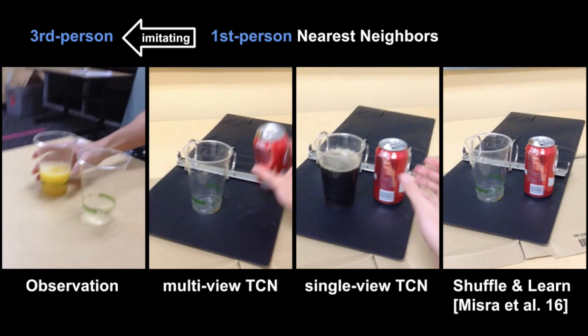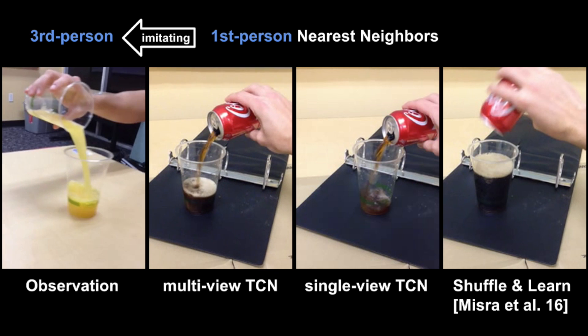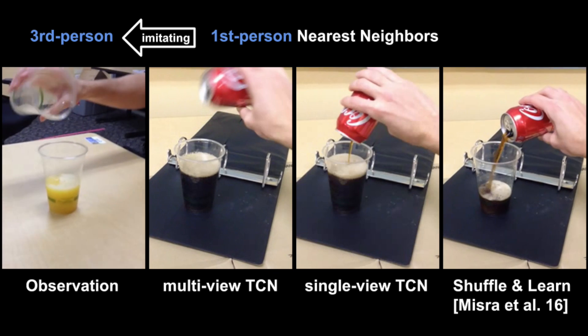Here is an example of imitation failure. In this case, TCN properly captures the pose of the hand and container, but fails to capture the amount of liquid in the cup.